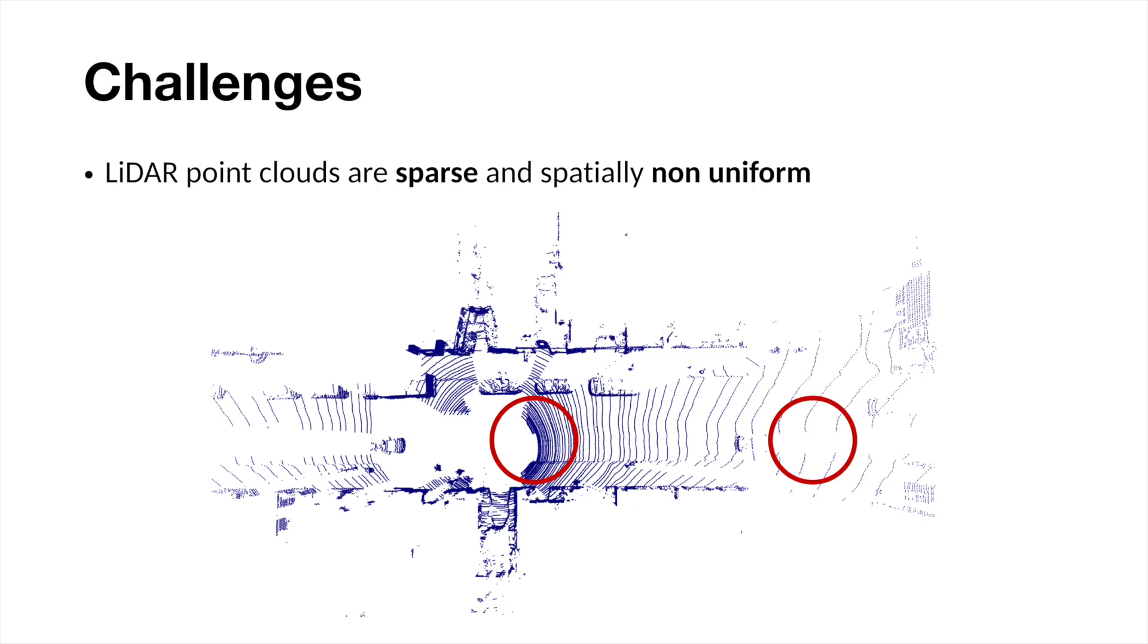Key challenges for compression are the sparsity of the points and the non-uniform density. As shown in this picture, areas close to the car are denser than the edges, which are very sparse.